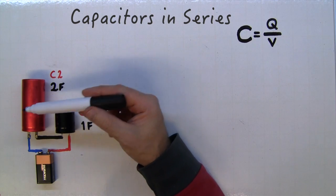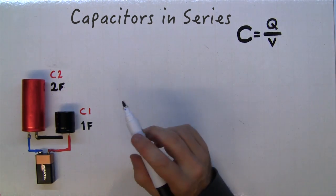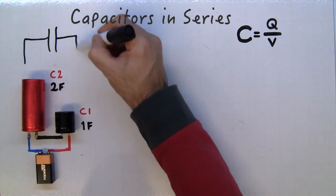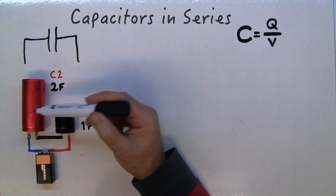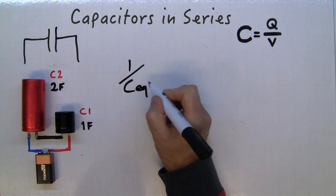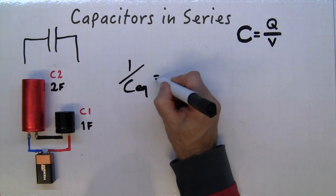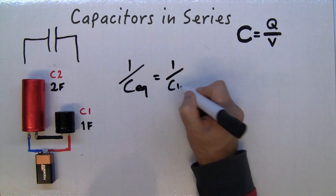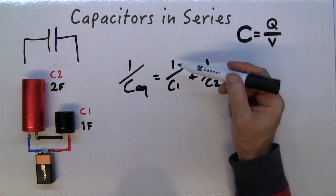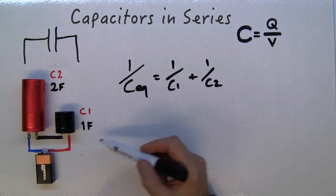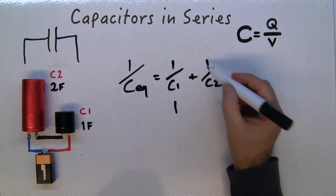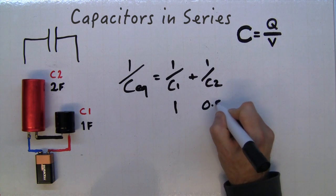Now we've got the capacitors in series and the calculations are a little bit more difficult. We've got to find out the equivalent capacitance of the two, and the voltages will be different across here as well. We start off by one over the equivalent capacitance equals one over C1 plus one over C2. One over one farad is one. One over two farads is 0.5.